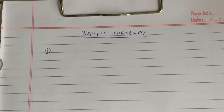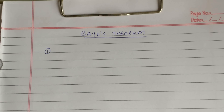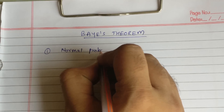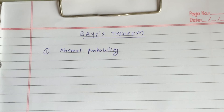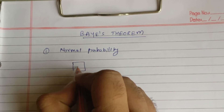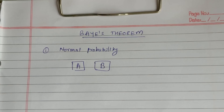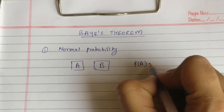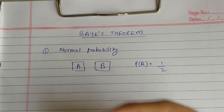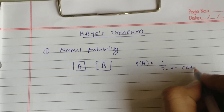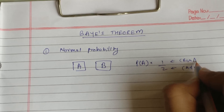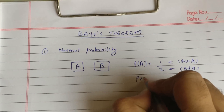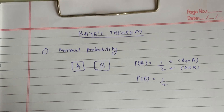The first thing you should know is about normal probabilities. What are normal probabilities? It is like if there are two boxes, box A and box B. What is the probability of selecting box A? It is represented as P(A) = 1/2, because there are two boxes and we selected box A. Similarly, the probability of box B equals 1/2.